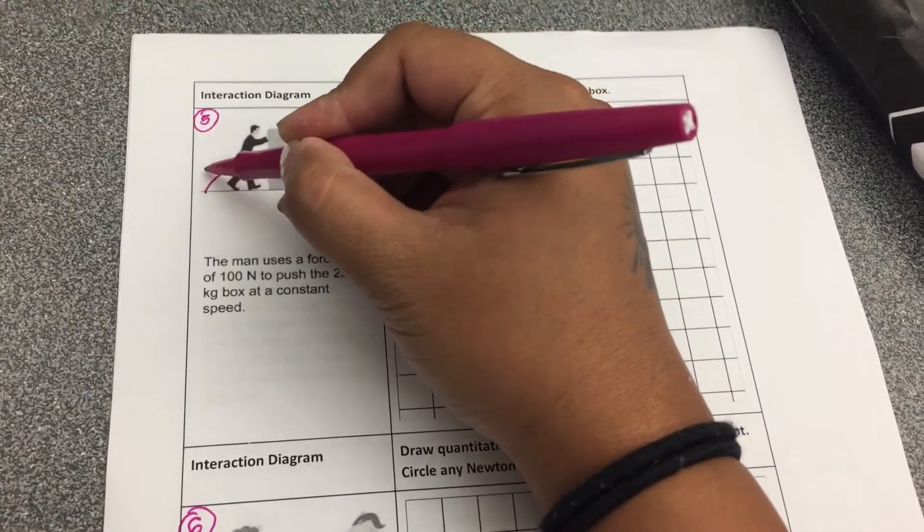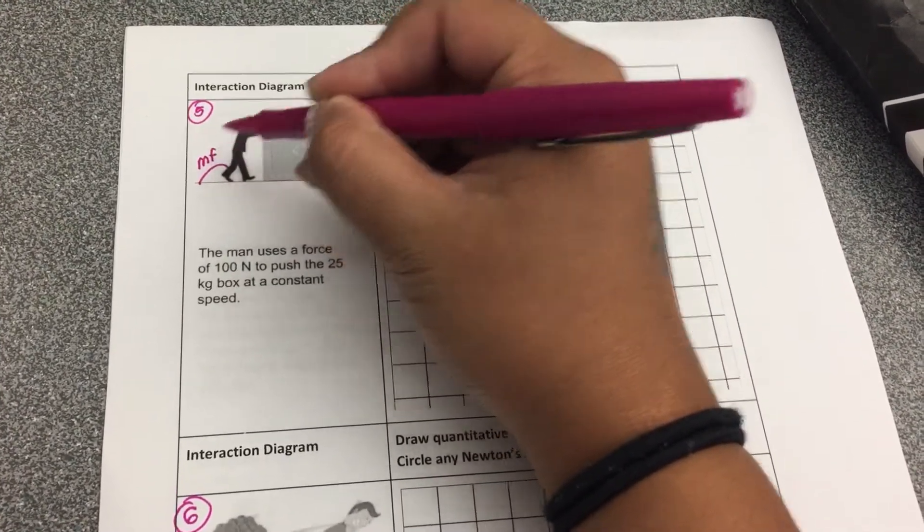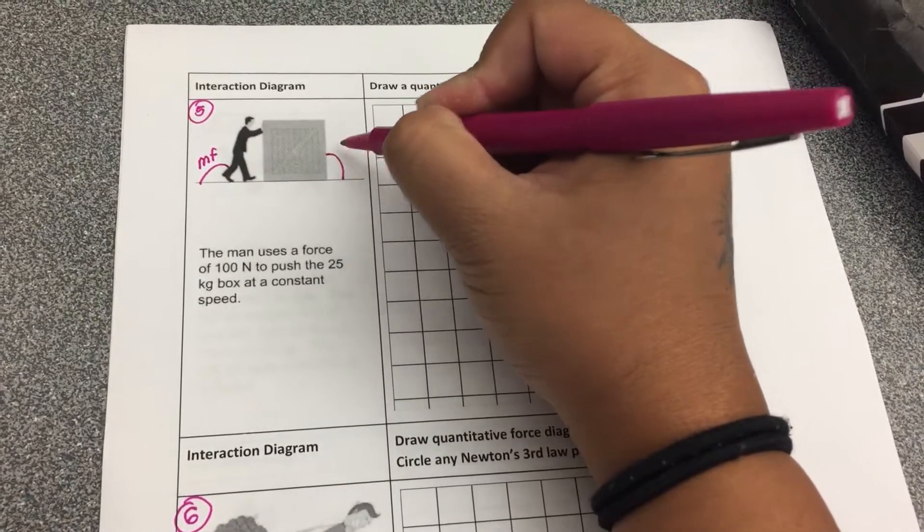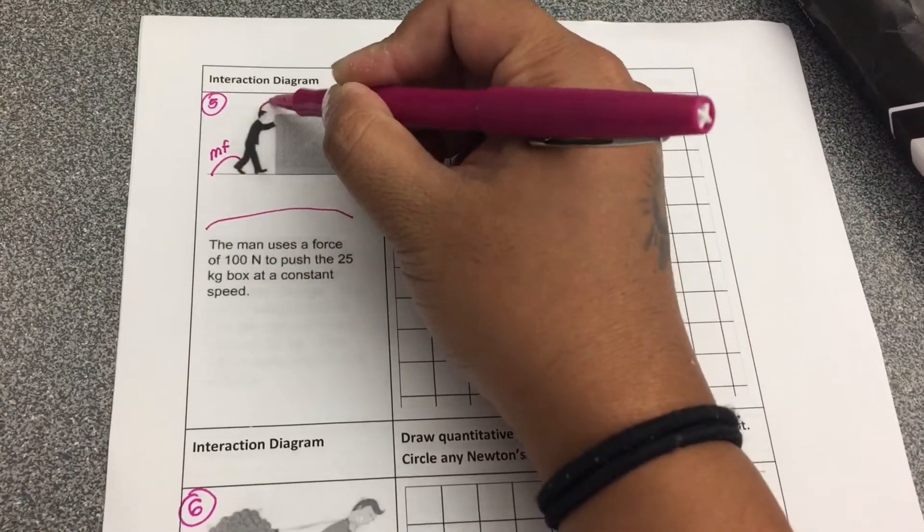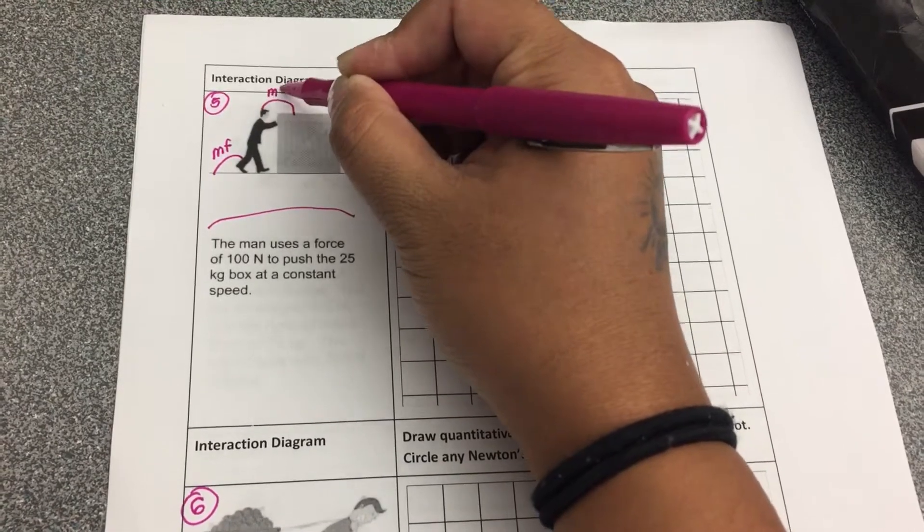So the man is interacting with the floor. The box is interacting with the floor. The man and the box are interacting with each other.